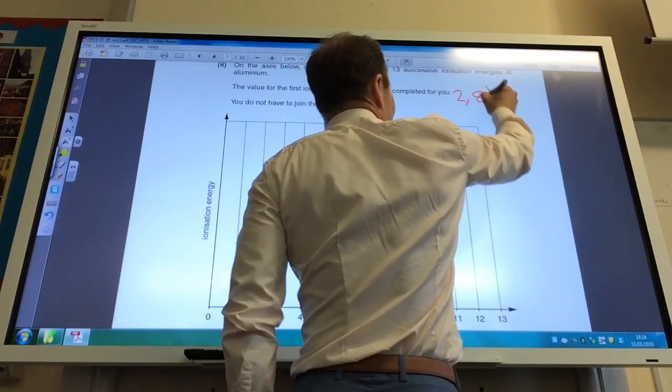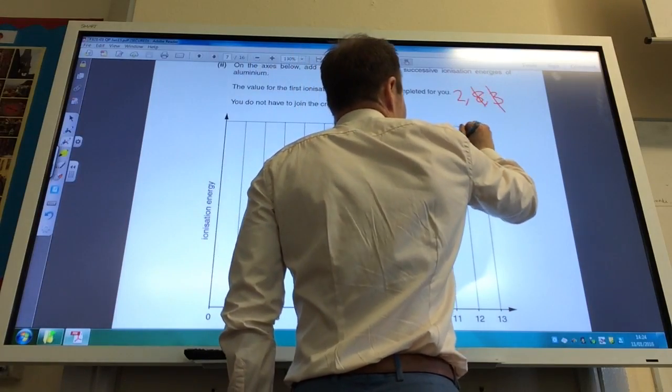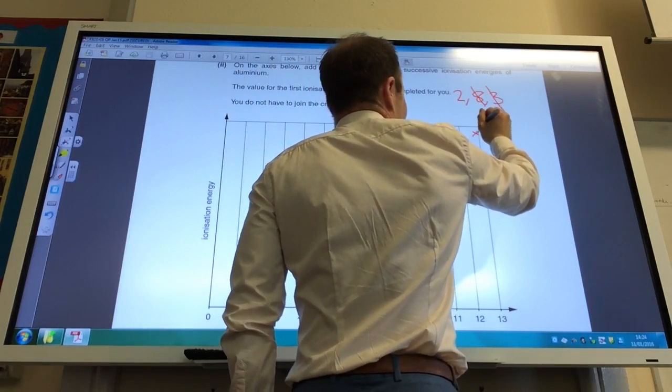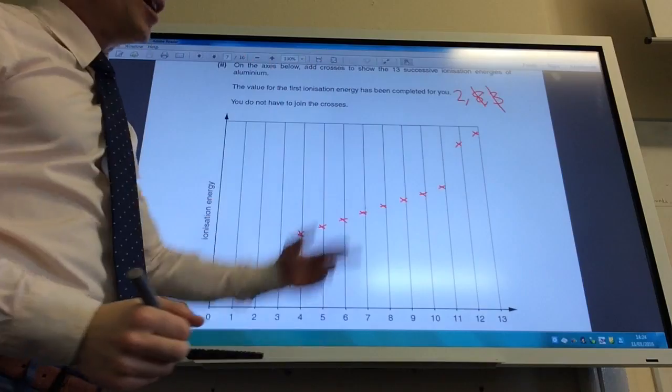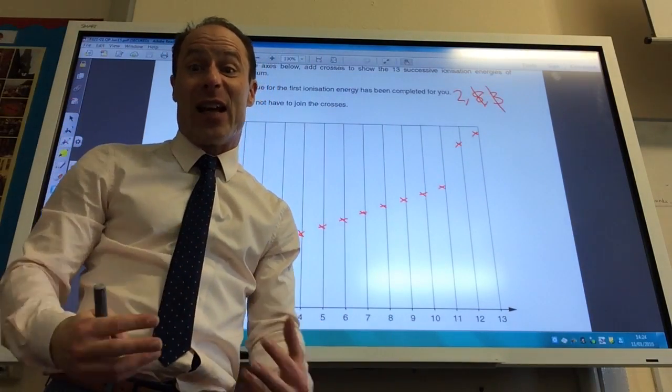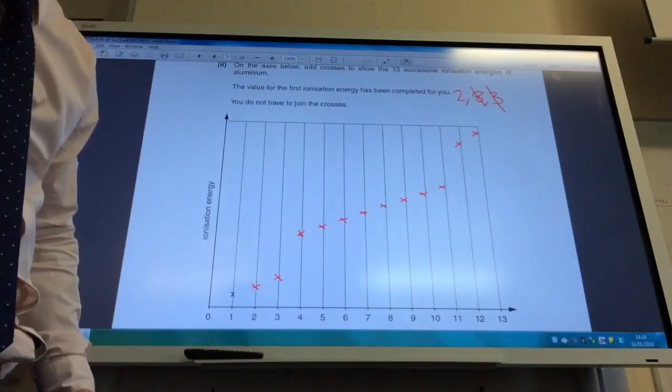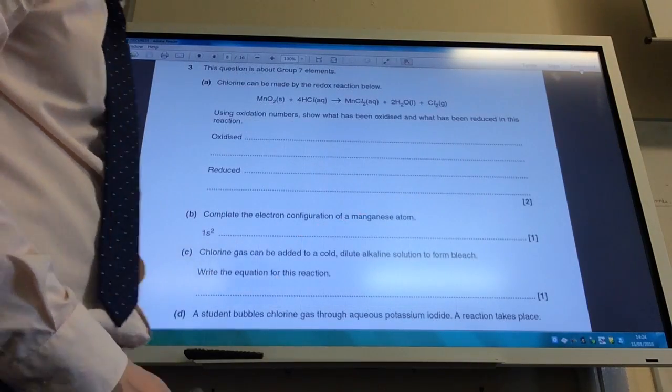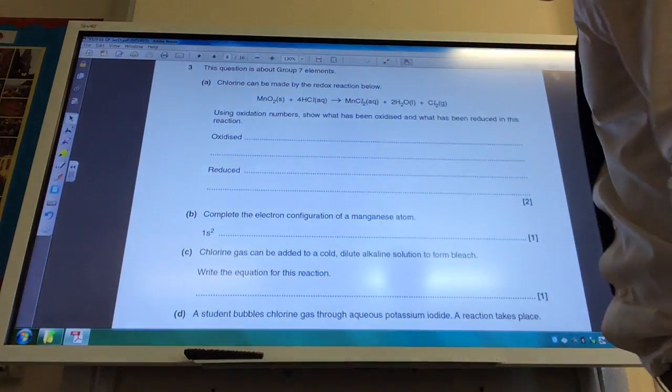And then the final 2, I get another big jump, like so, to show that I'm in the inner shell. So those are the ones closest to the nucleus, they are the ones that are hardest to remove. Okay, so time to move on to question 3. This is about group 7.